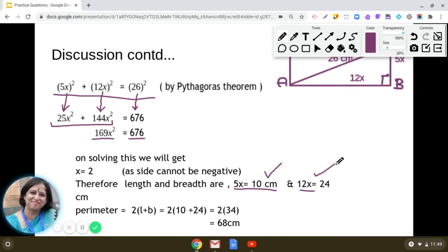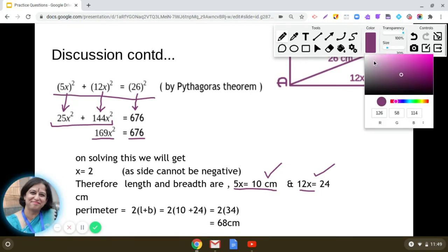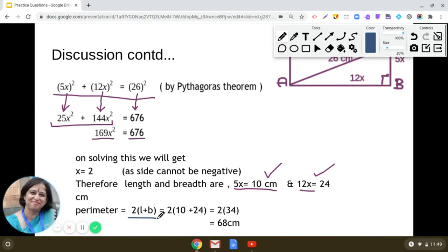Now in this question we have to find the perimeter also. So what is the formula for the perimeter? So perimeter is 2 into L plus B. So put the value of length and breadth which you have found. So 2 into 24 plus 10. So 24 plus 10 is 34. So 2 into 34 which gives us 68 centimeters.